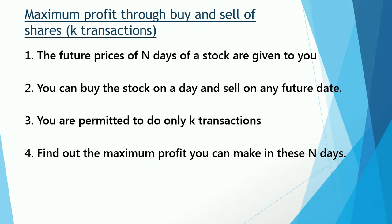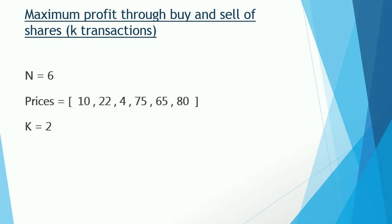The data given: n equals 6, meaning future price predictions of six days are given. The prices are: day one is 10, day two is 22, day three is 4, day four is 75, day five is 65, and day six is 80. The value of k is 2, meaning you can buy and sell the share two times — no more than that.